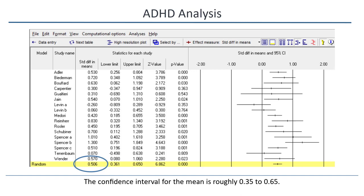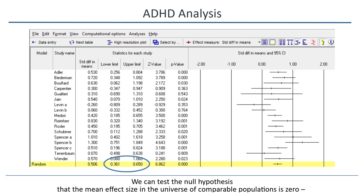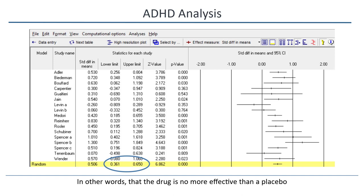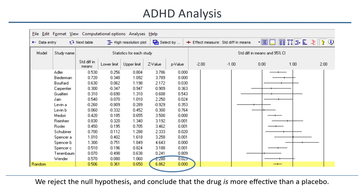The confidence interval for the mean is roughly 0.35 to 0.65. In the universe of populations from which these studies were sampled, the mean probably falls in that range. We can test the null hypothesis that the mean effect size in the universe of comparable populations is 0 — in other words, that the drug is no more effective than a placebo. The test yields a Z value of 6.86 and a P value of less than 0.001. We reject the null hypothesis and conclude that the drug is more effective than a placebo.